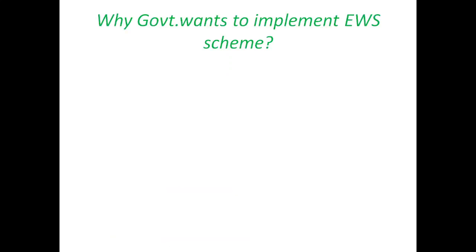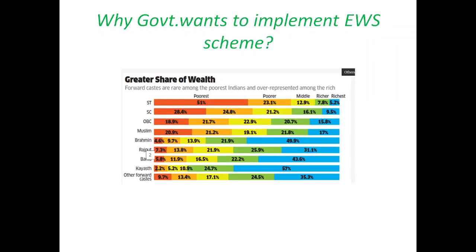The new government wants to implement the Economically Weaker Section scheme. As data shows, even though poor people exist in smaller numbers within the forward castes, they do still exist. In order to bring justice to these people, they implemented the EWS scheme based on the recommendation of a report given by S.R. Sinha in 2010 for EWS reservation.